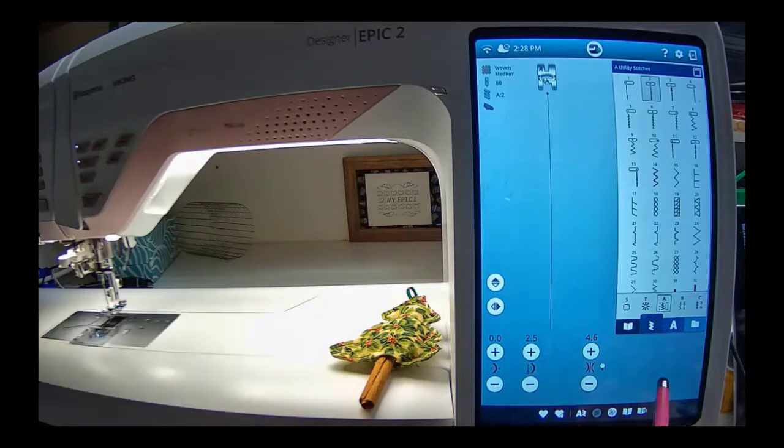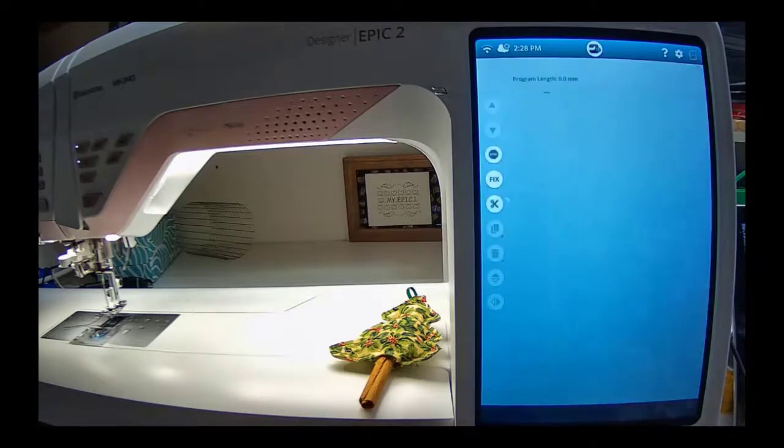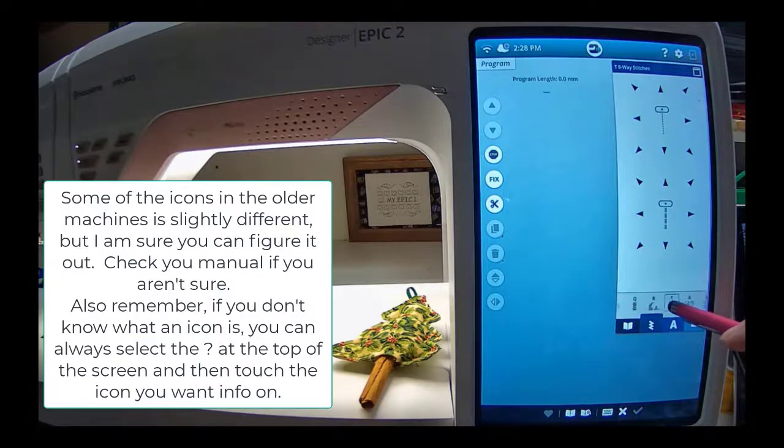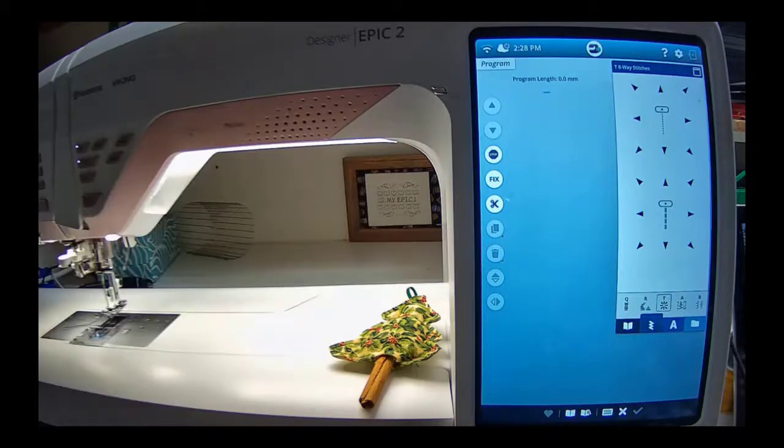What we're going to do is we're going to go to programming, and the first thing, we're going to select this, and then you want menu T, which is your 8-way stitches. There's your menu T. You have two choices when you're using 8-way stitches. You can either do a straight, just a regular old straight stitch, or you can do a reinforced stitch. We're just going to use a regular straight stitch to create this tree.